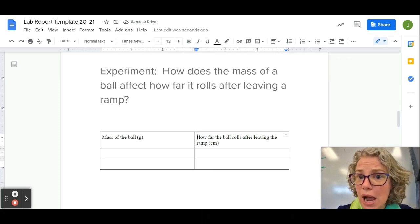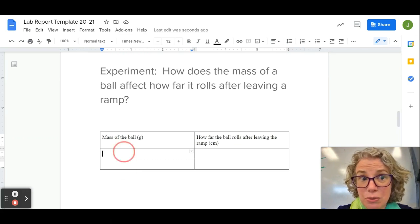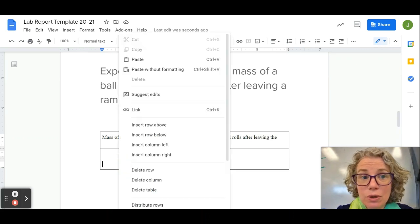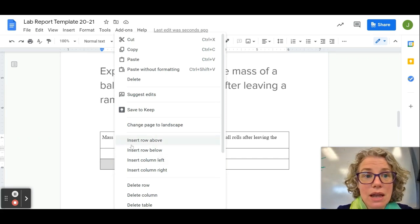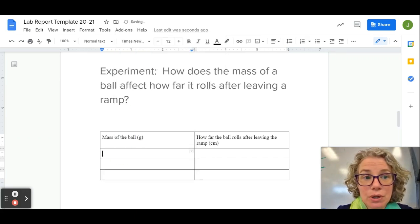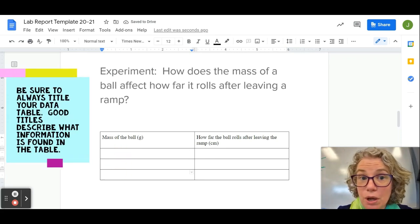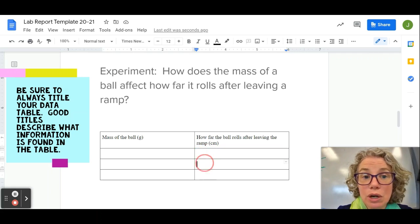I'm only going to need two columns for this experiment. I probably would do at least three different masses, so if I want to insert a row I would go to right clicking with the mouse and then insert a row. So now I've got space to record the mass of three different balls and record how far they go down the ramp.